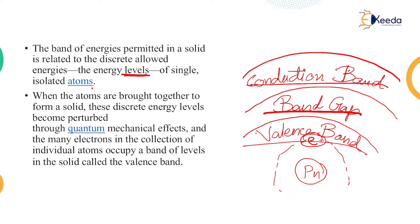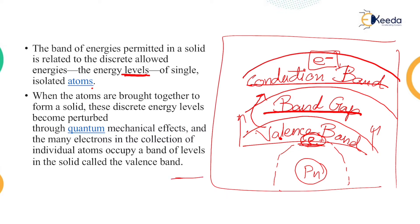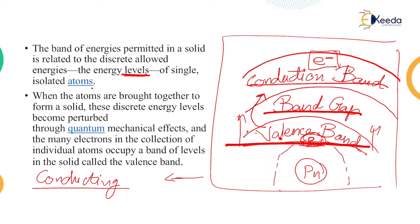Once the electron has enough energy to go to the conduction band, that particular atom of that particular metal will start conducting either heat or electricity. If you are giving energy in the form of heat, it will start conducting heat. If you are giving energy in the form of electricity, it will start conducting electricity. It starts with the valence band and moves to the conduction band, and there is a band gap in the middle.